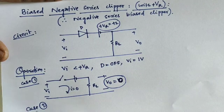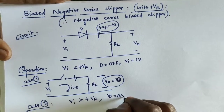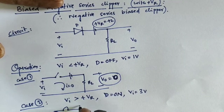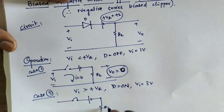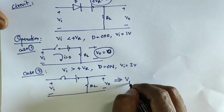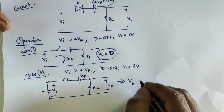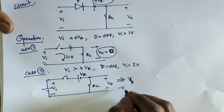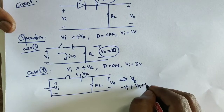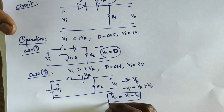Case 2: when Vi is greater than plus Vr, the diode acts in the on state. For example, if Vi equals 3 volts, the diode turns on. We are applying plus and minus Vr across the circuit with load resistor RL and input Vi. In this condition, V0 is equal to Vi minus Vr. This is the output function for Case 2.